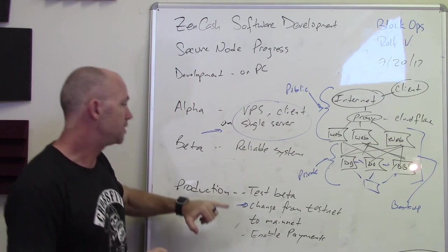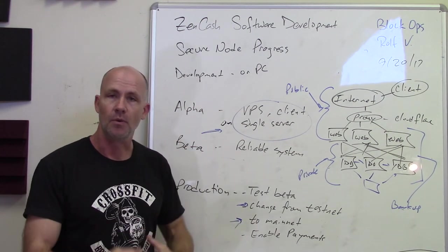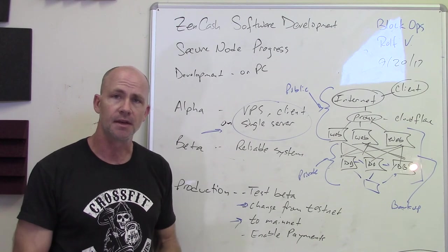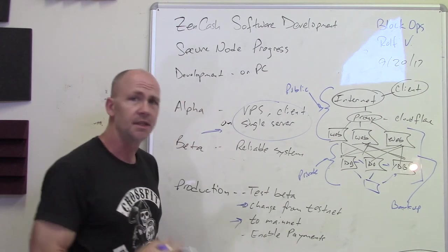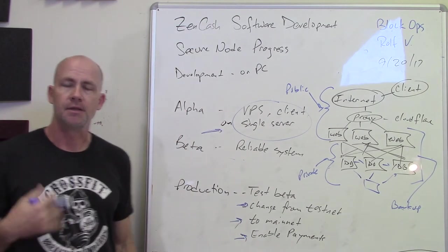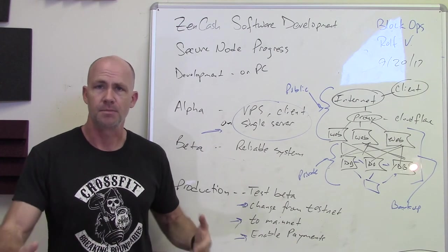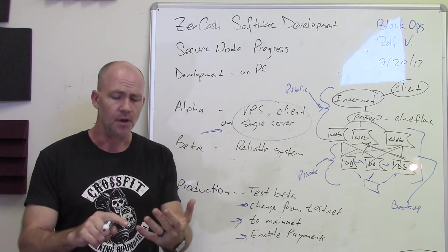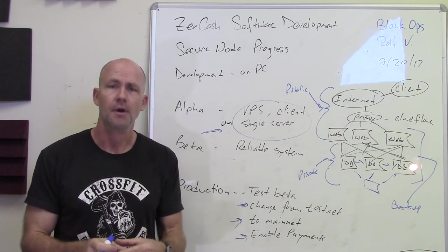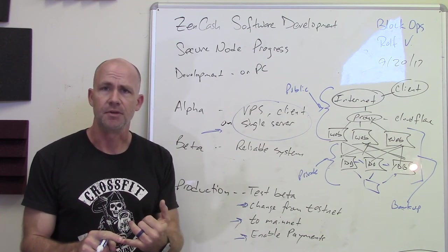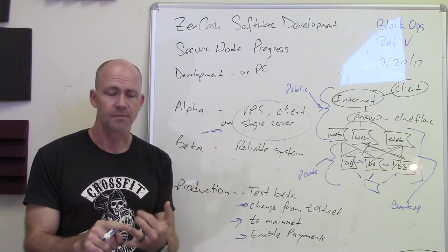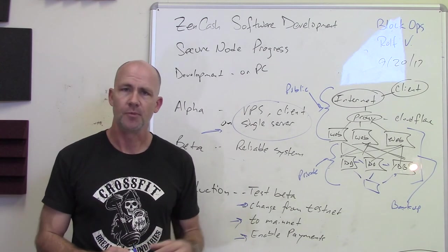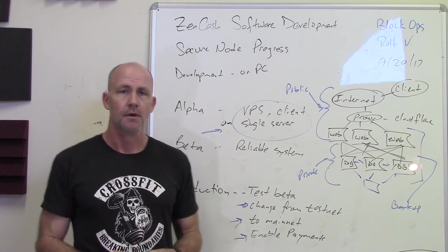Once beta testnet testing is done, we'll change over from testnet to mainnet without enabling payments first — just to make sure everybody can transition and operate on mainnet in case there are any differences. We'll run that for a while, and when it's working well, we'll enable payments. As you may recall, 3.5% of the mining reward gets paid out to people running secure nodes reliably. Briefly, for a secure node: you need 42 Zencash in your own wallet, a system running the secure node with a certificate, the latest Zen node software, and enough processor and memory to do a shielded transaction within a reasonable period of time.